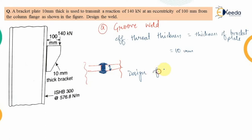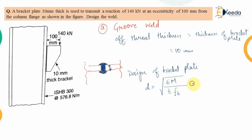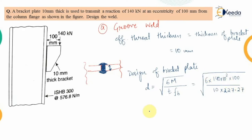For the design of the bracket plate, we find the depth using the formula D = √(6M / (t × fb)), where M is the moment due to eccentricity, t is the bracket plate thickness, and fb is the bending stress for groove weld. Substituting: D = √(6 × 140×10³ × 100 / (10 × 227.27)), which gives 192.25 mm, rounded up to 210 mm.